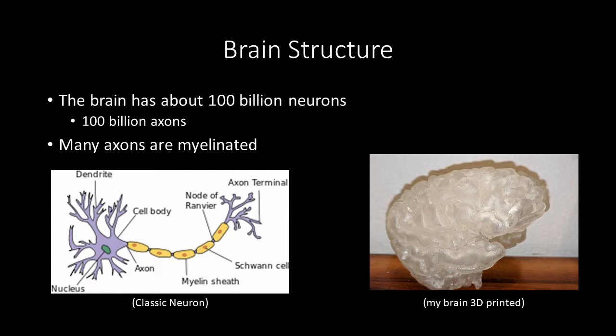Let's jump into the background of DWI. DWI is used to explore myelination in the brain. On average, there are about 100 billion neurons in the brain, which means 100 billion axons in the brain, and most of these axons are myelinated. These axons are a major component of how information is transmitted in the brain, and being able to describe them could be extremely helpful to accurately model neurons and behavior.